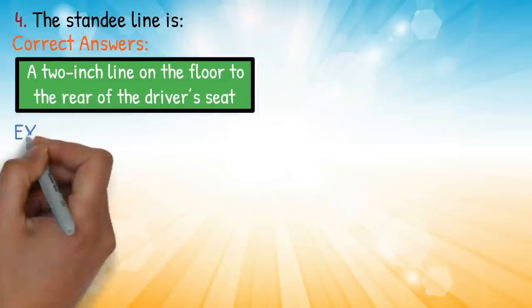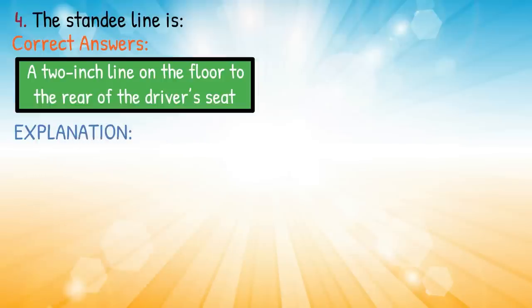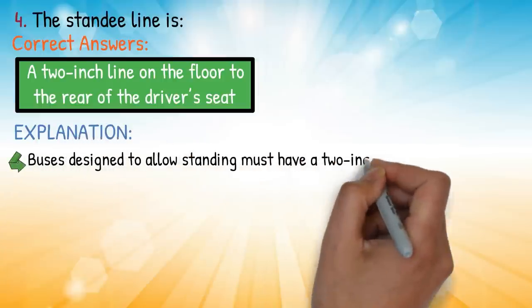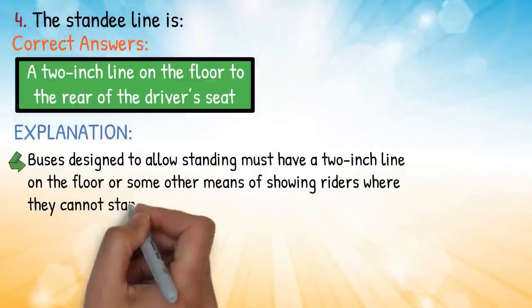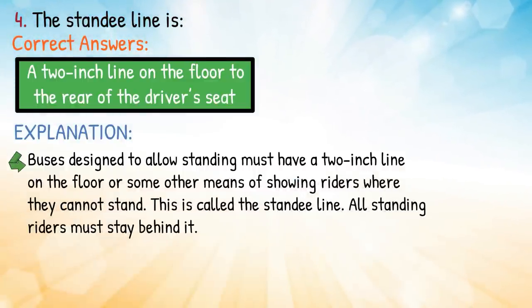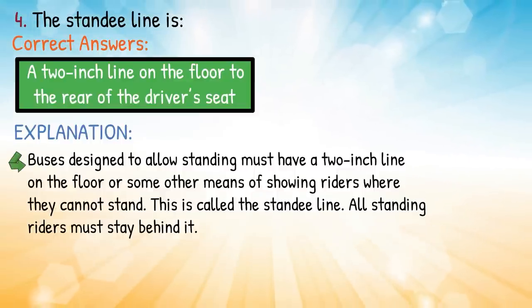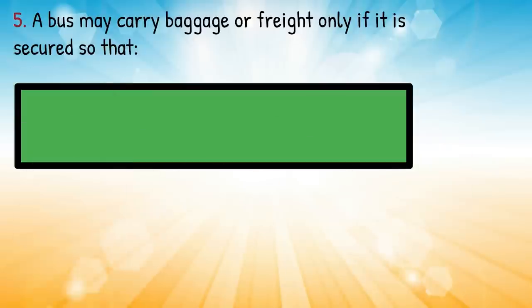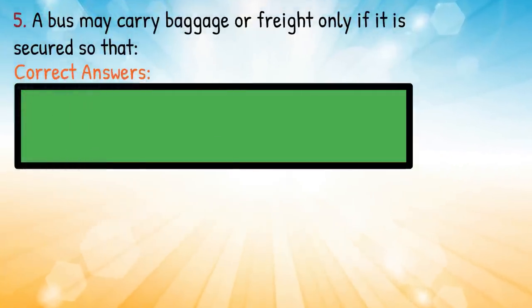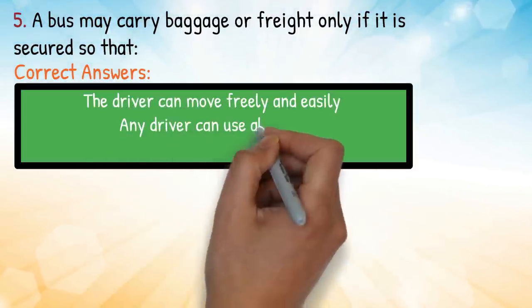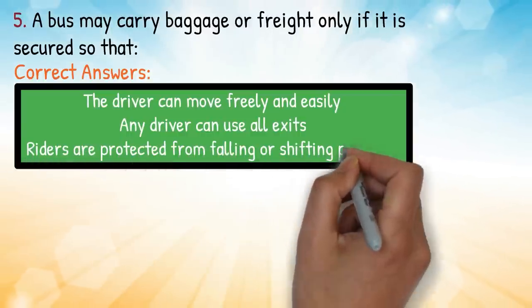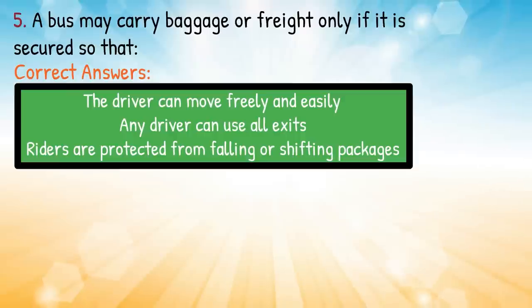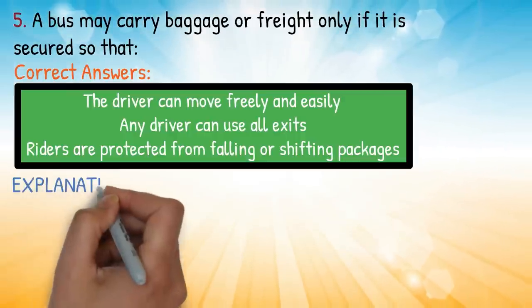Question four: the standee line is — correct answer: a two-inch line on the floor to the rear of the driver's seat. Explanation: buses designed to allow standing must have a two-inch line on the floor, or some other means of showing riders where they cannot stand — this is called the standee line; all standing riders must stay behind it. Question five: a bus may carry baggage or freight only if it's secured so that — correct answer: the driver can move freely and easily, any driver can use all exits, and riders are protected from falling or shifting packages.